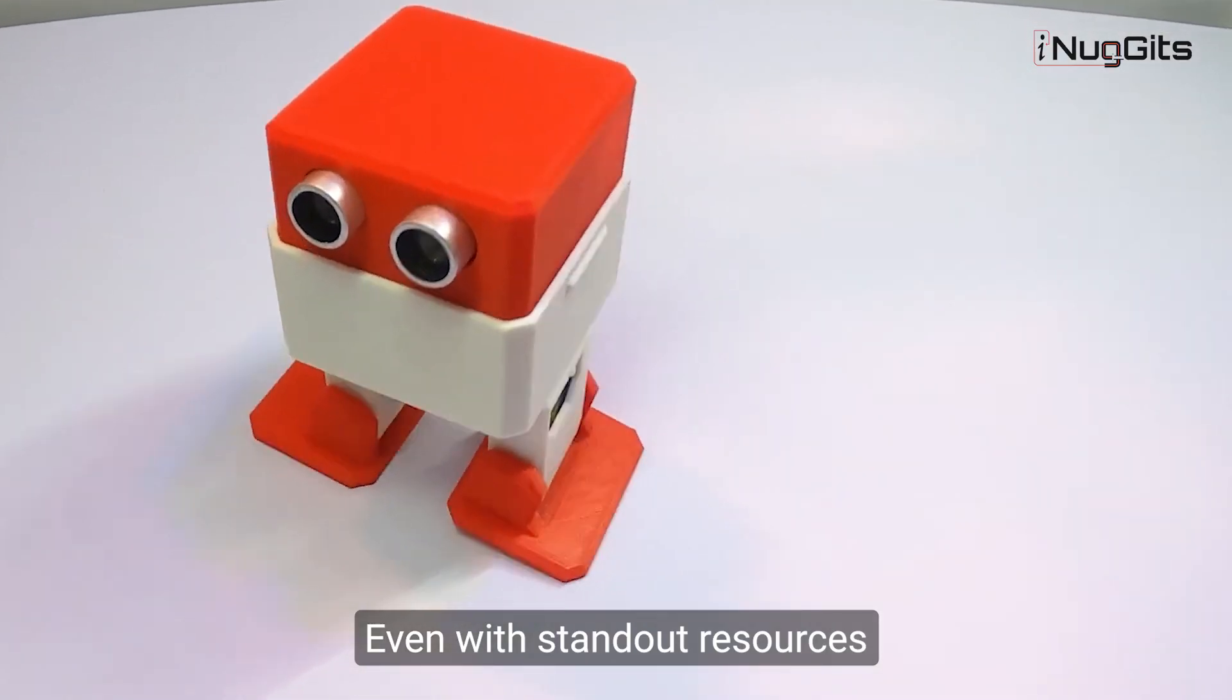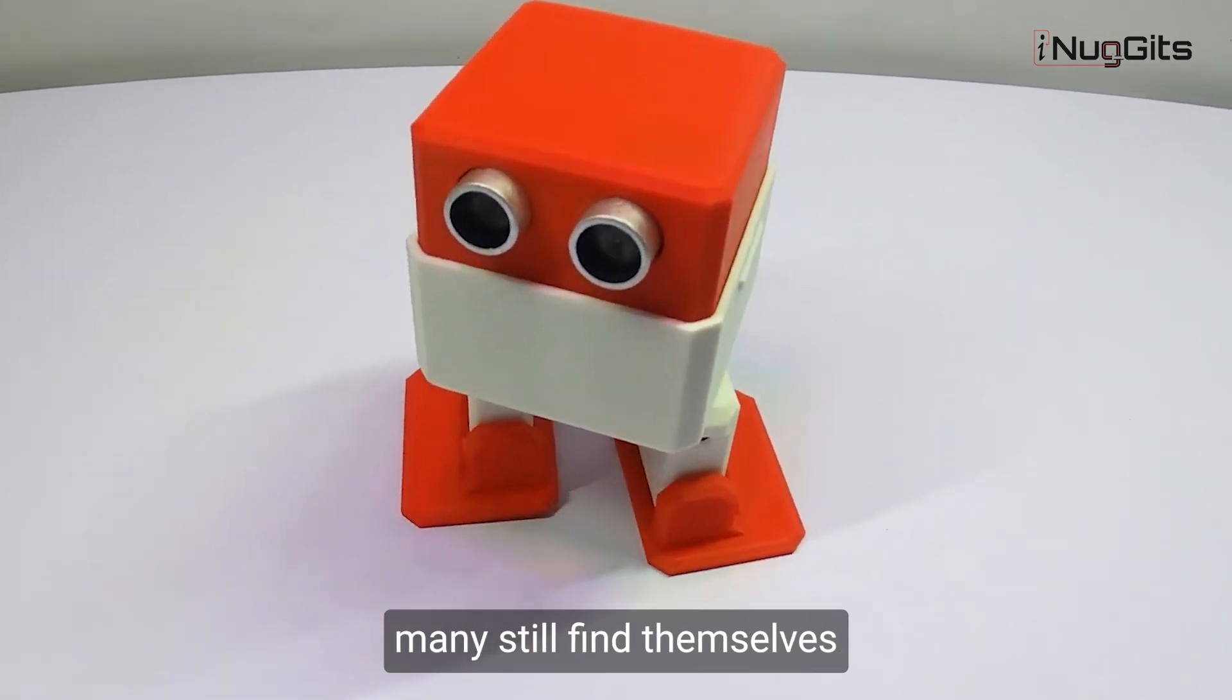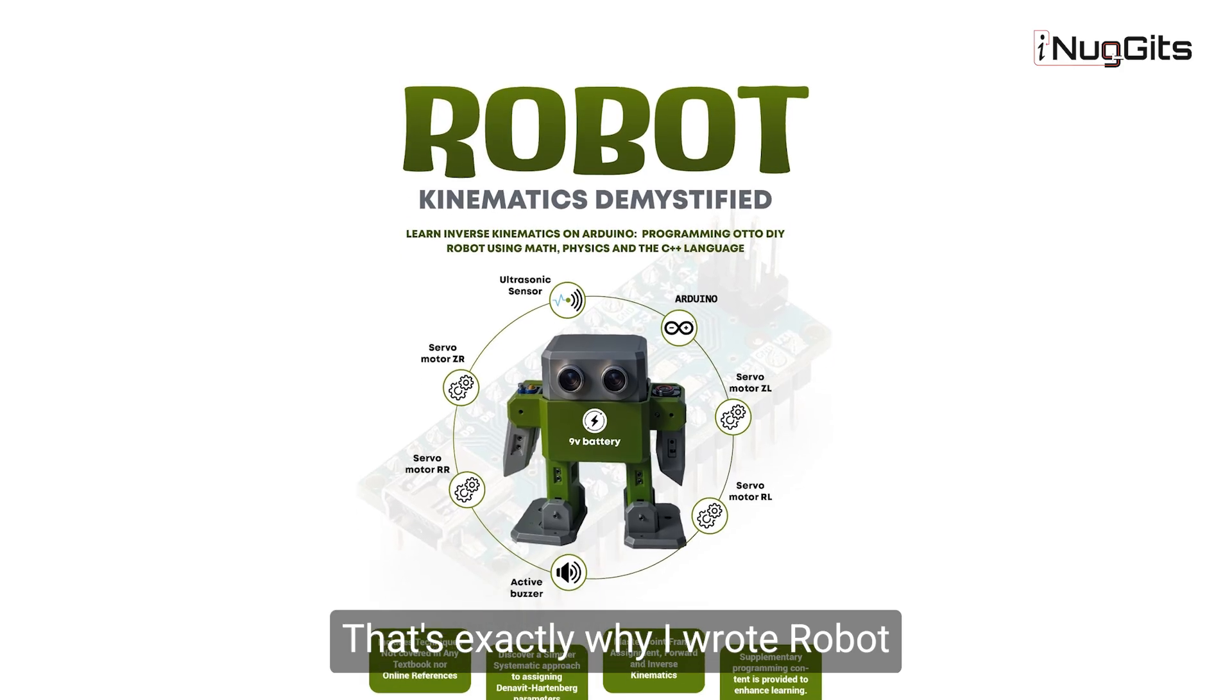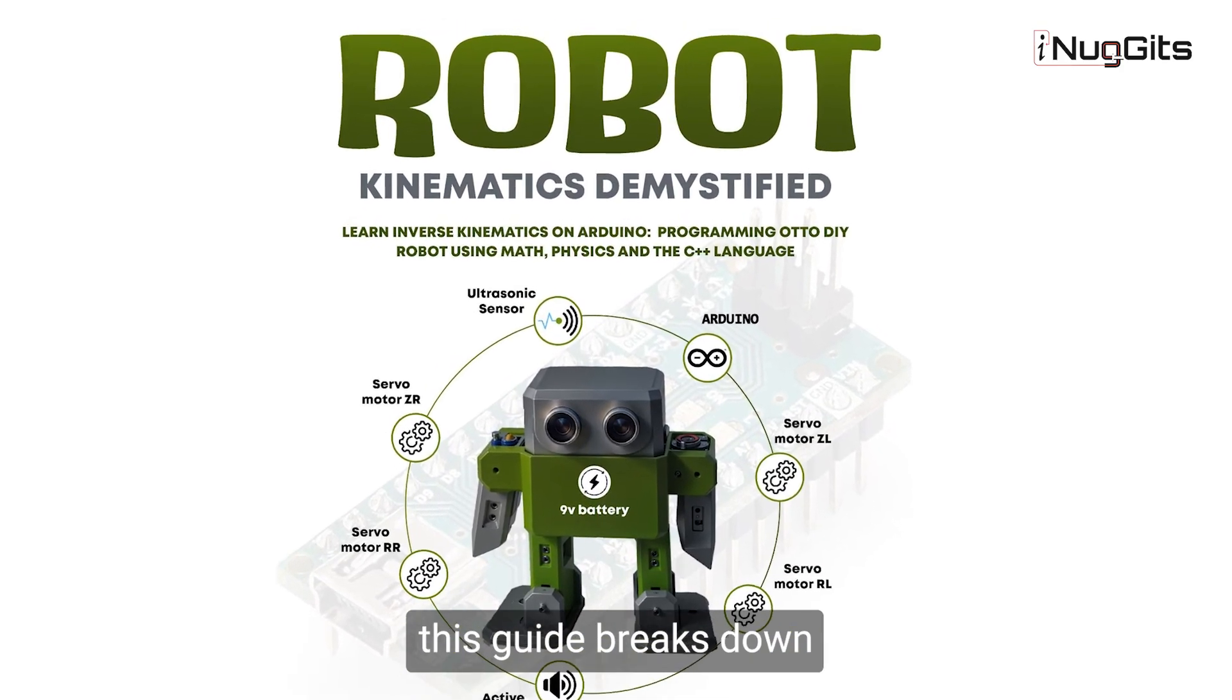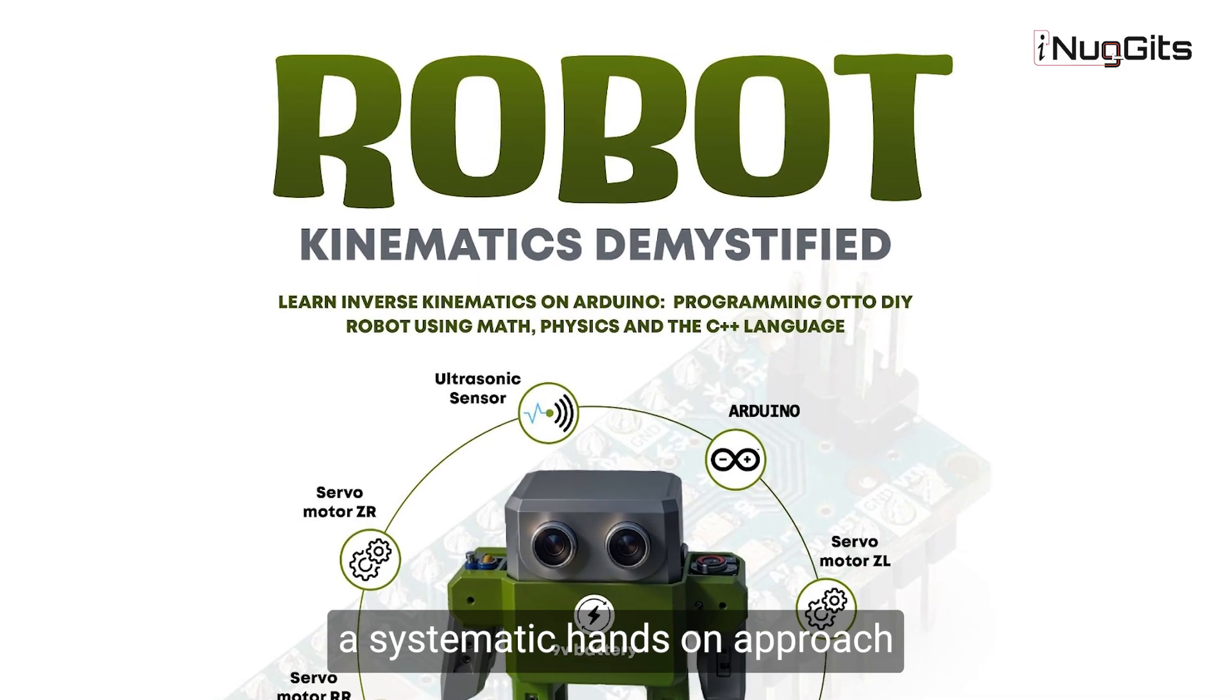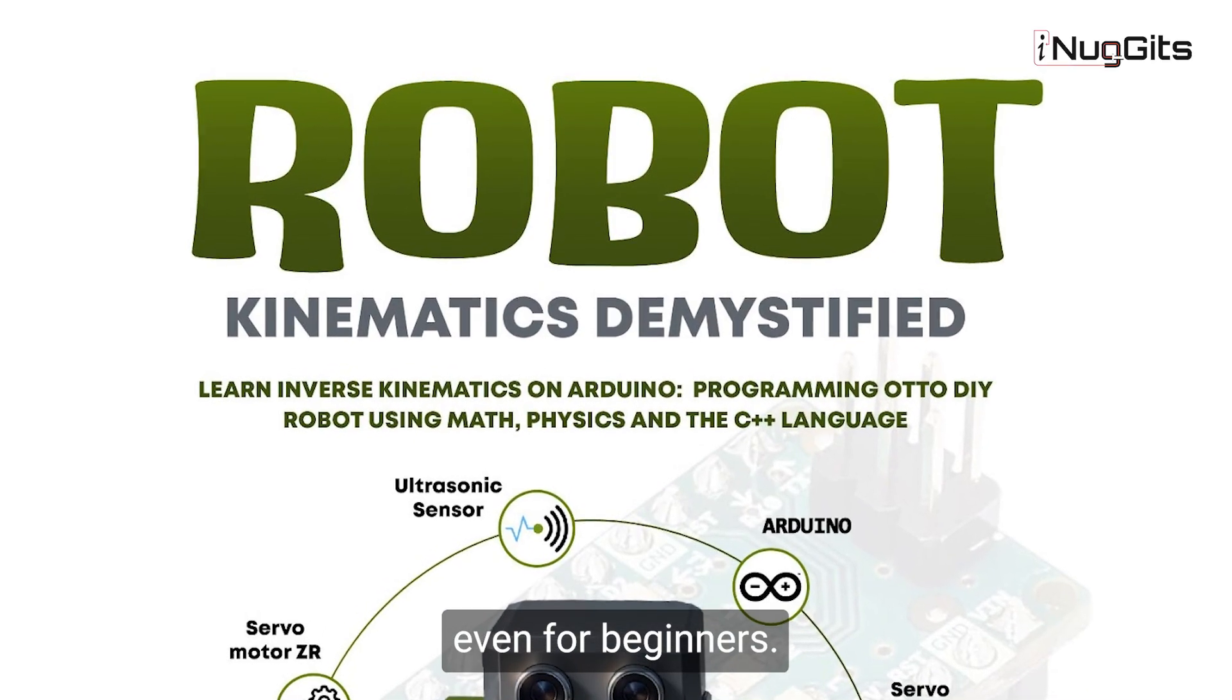Even with standout resources like Jacob Leander's Master Inverse Kinematics for Robots, many still find themselves stuck when it's time to implement the concepts. That's exactly why I wrote Robot Kinematics Demystified. This guide breaks down inverse kinematics using the proven Denevit-Hartenberg convention, a systematic, hands-on approach that makes complex math accessible, even for beginners.